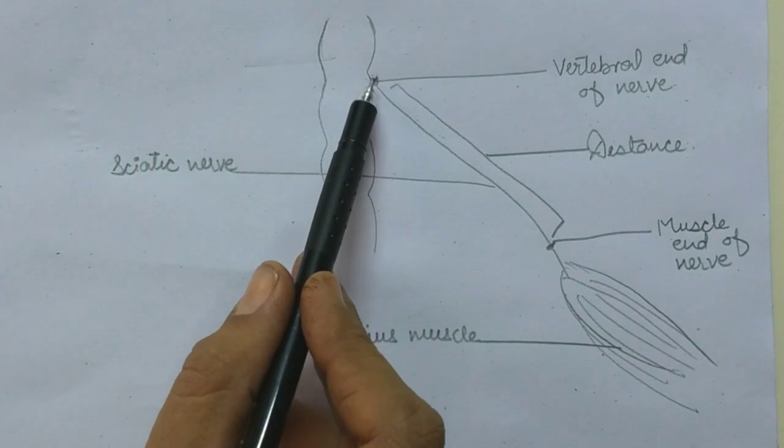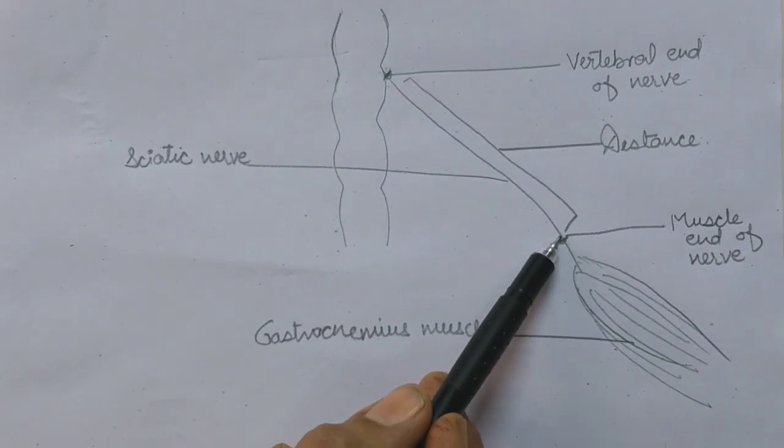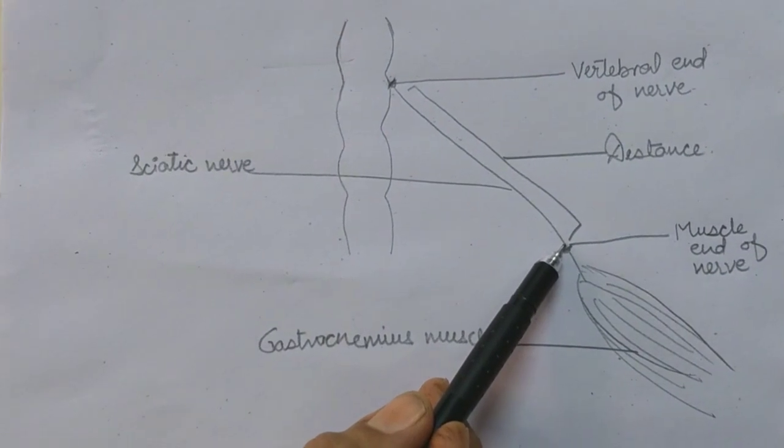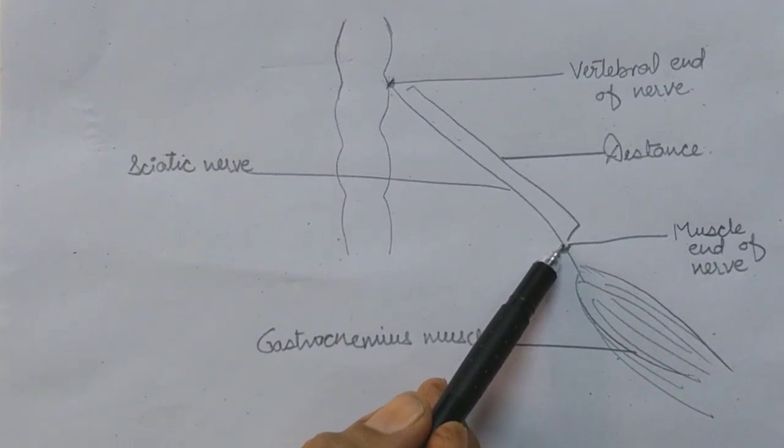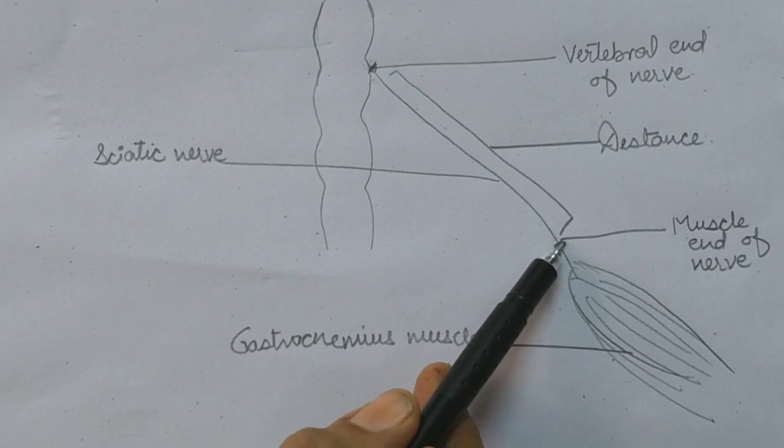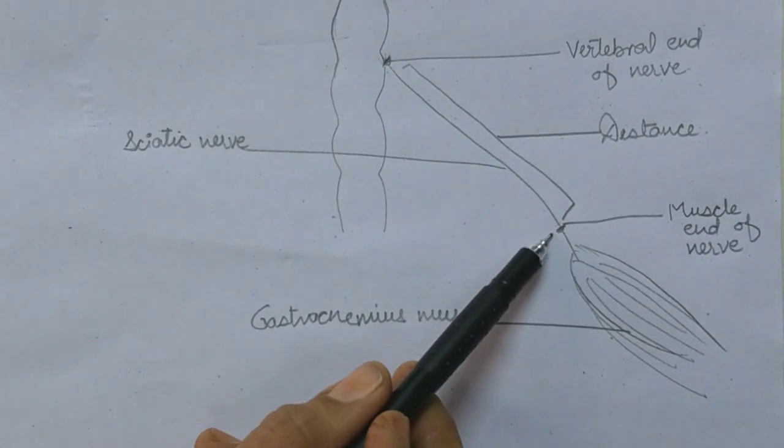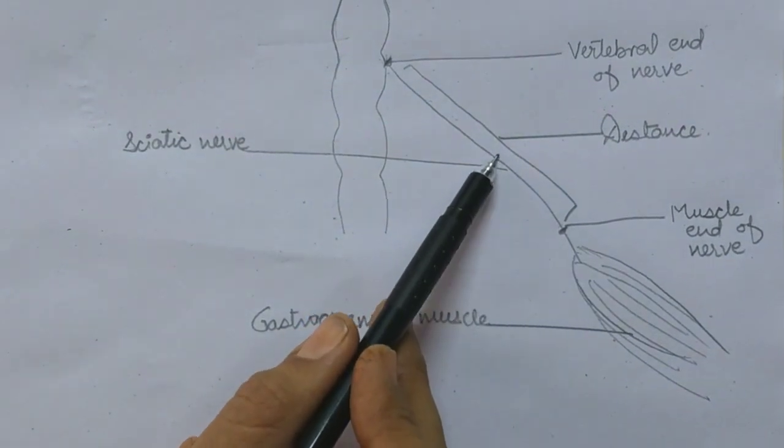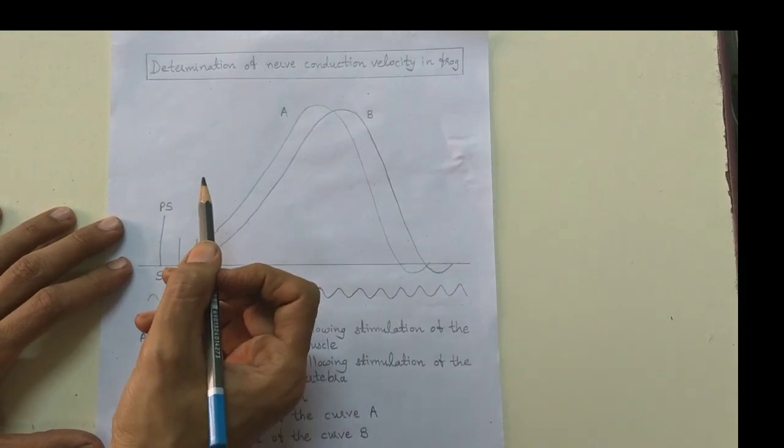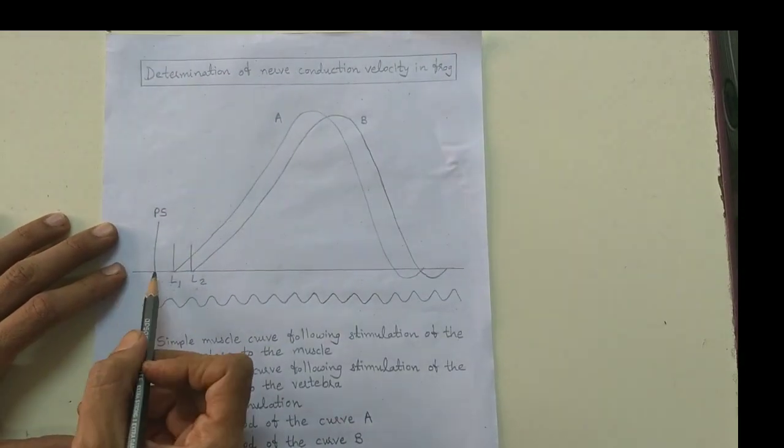Then stimulate at the muscle end of the sciatic nerve and again record a simple muscle twitch with same baseline, same point of stimulus and same strength of stimulus. Mark the muscle end of the sciatic nerve. The distance between vertebral and muscle end of the nerve shows the distance traveled by the nerve impulse. Here by this graph we can determine the nerve conduction velocity in the frog. You can see here this is point of stimulus.